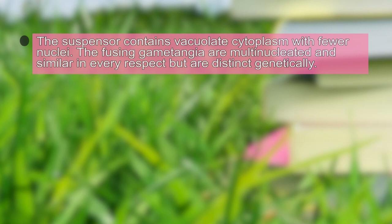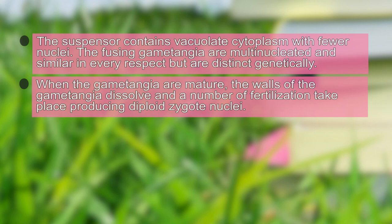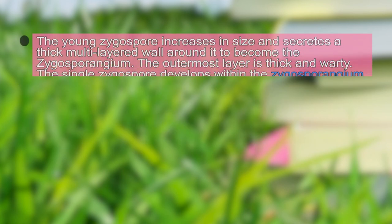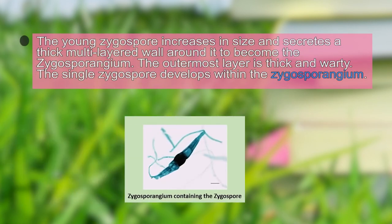The fusing gametangia are multi-nucleated and similar in every respect but genetically distinct. When the gametangia are mature, the walls dissolve, multiple fertilization events take place, and diploid zygote nuclei are formed. The combined protoplast containing a number of diploid nuclei is now known as the zygospore. The young zygospore increases in size and secretes a thick multi-layered wall around it, forming a zygosporangium.